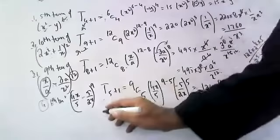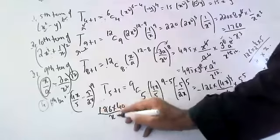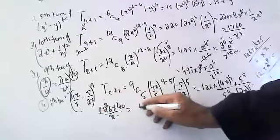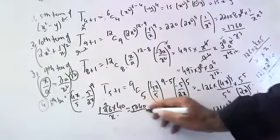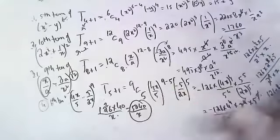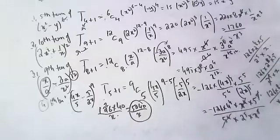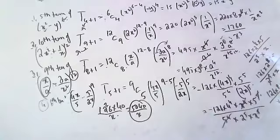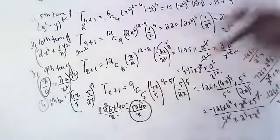So the answer is -126 × 40 / x = -5040 / x. Note that the answer should be negative, children — there is a minus sign there. Slowly if you do it, you will understand. It is just direct substitution into the formula.